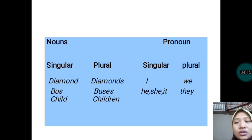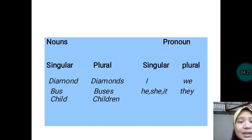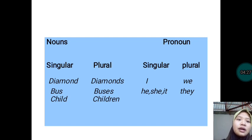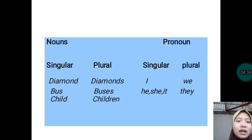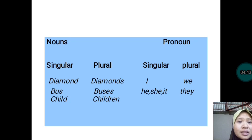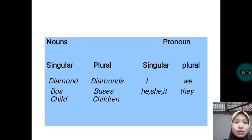We can notice that child is an irregular noun because it changes its form in the plural. Also for pronouns, the singular pronouns are I, she, he, it, while the plural pronouns are we and they — they are changing in forms.